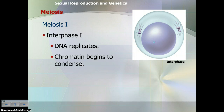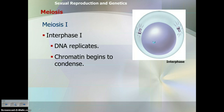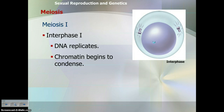Interphase is the same — there's only one interphase, because DNA replicates only one time. If we replicated it twice, we wouldn't end up with cells that have half the number of chromosomes. So you replicate DNA once but divide the cell twice during meiosis. In interphase, DNA replicates and the chromatin starts to condense.